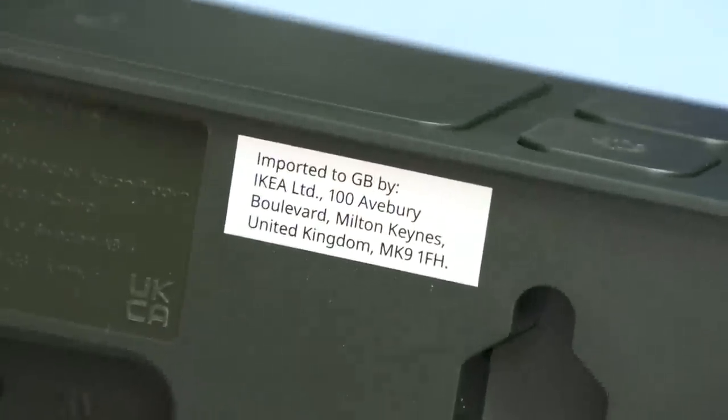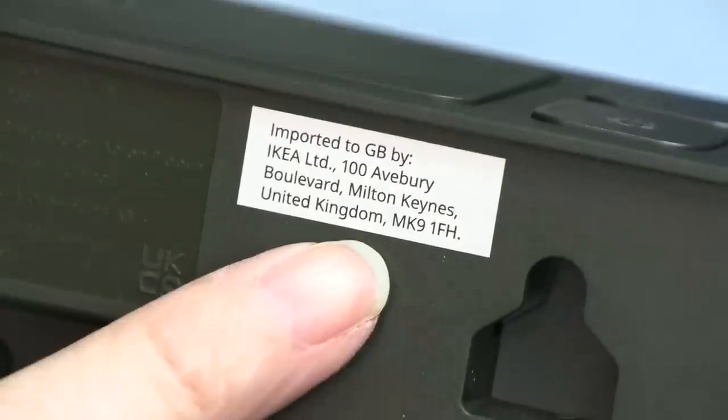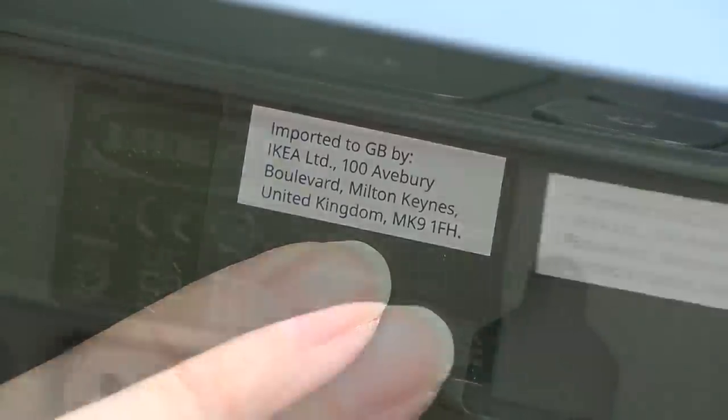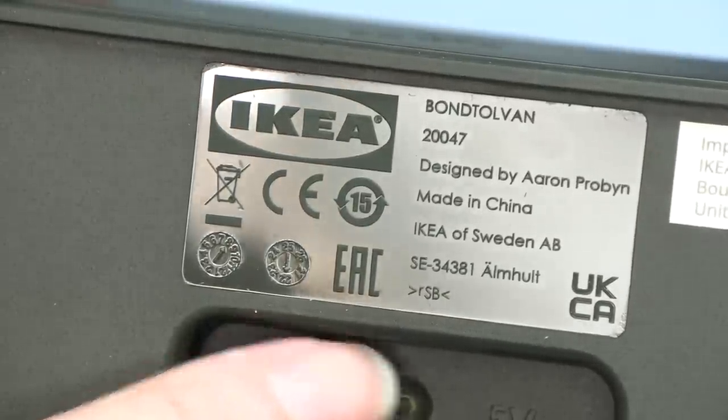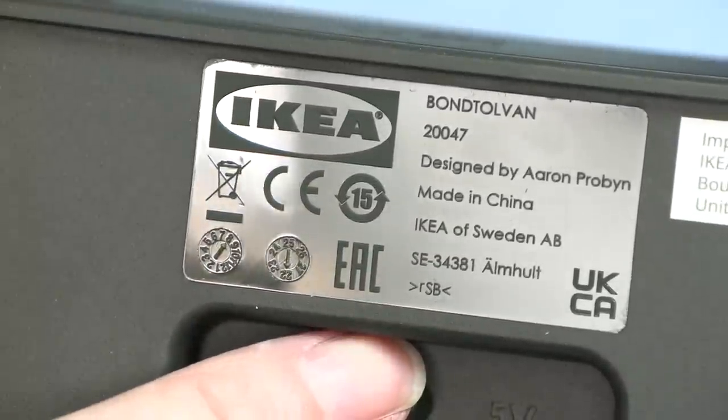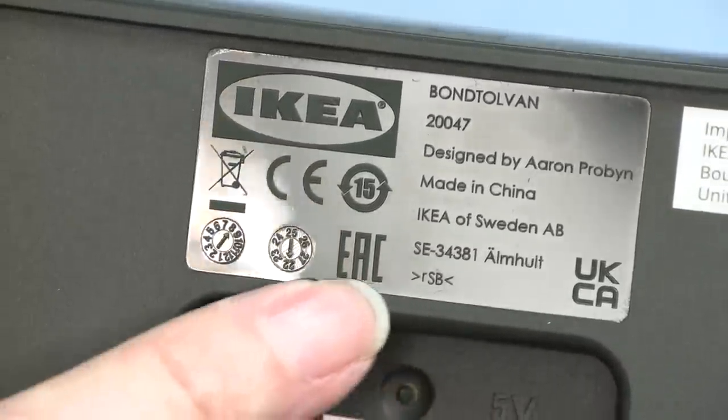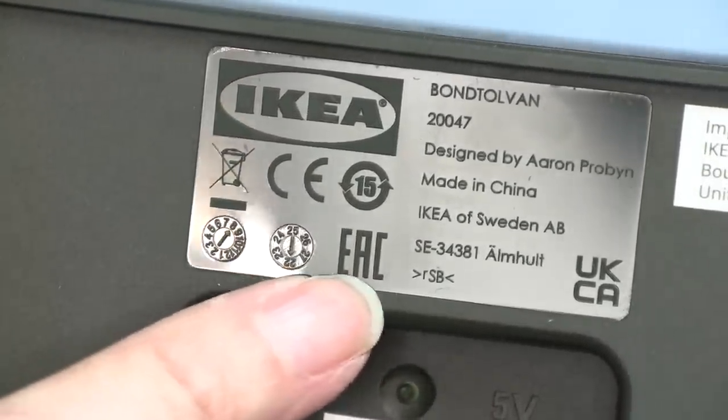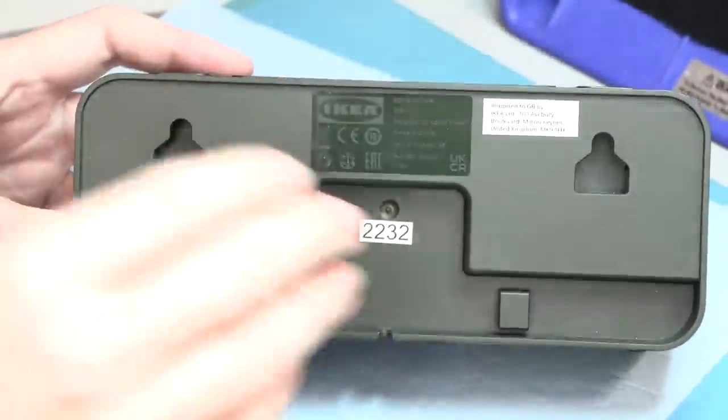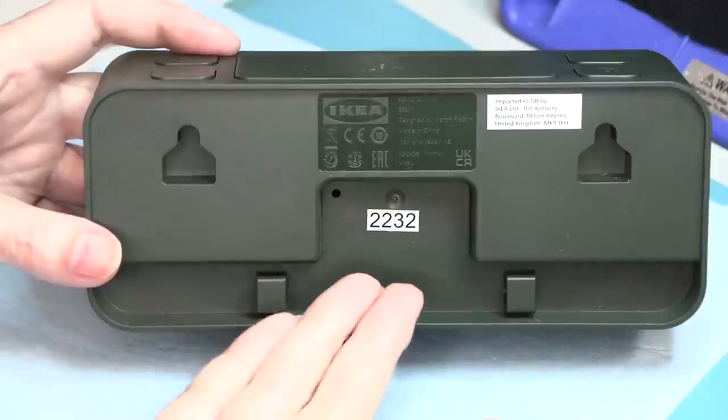It says here, go to the fine print, imported to Great Britain. Made for IKEA in Britain. Made in China, of course. UK, Canada. So I wonder how this ended up in the US. Maybe the reason they don't have the adapter is because the adapter was a UK adapter? I don't know.